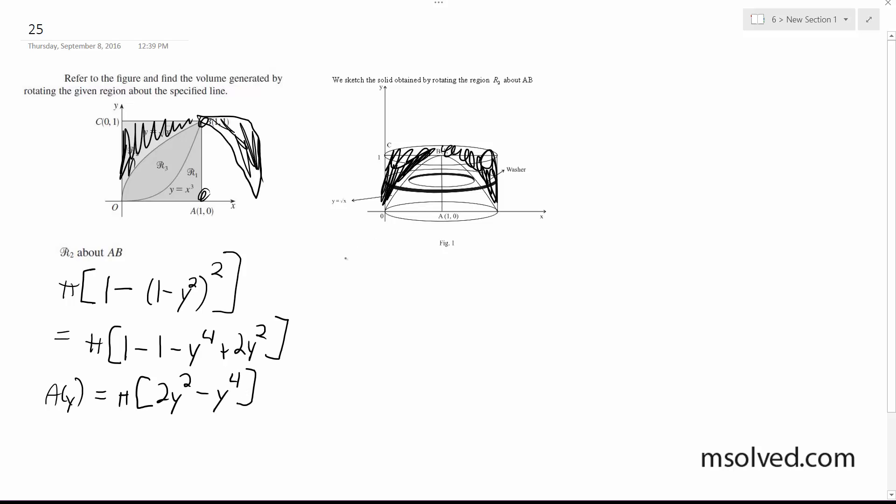Okay, now integrating this, so volume is equal to, from 0 to 1, of π times 2y² minus y⁴ dy. We get π times 2/3 y³ minus 1/5 y⁵ from 0 to 1, which is π(2/3 - 1/5).